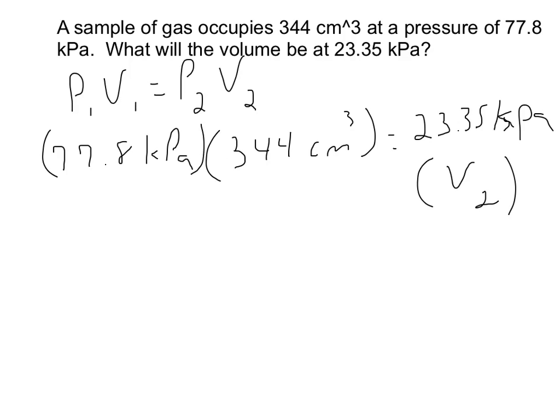So let's go ahead and simplify all of this. 77.8 times 344 gives us... important to know where that comma goes... 26,763.2. And now our units have not canceled out, so they're just kind of all right there. Kilopascals times centimeters cubed, and that equals 23.35 kilopascals times V2.